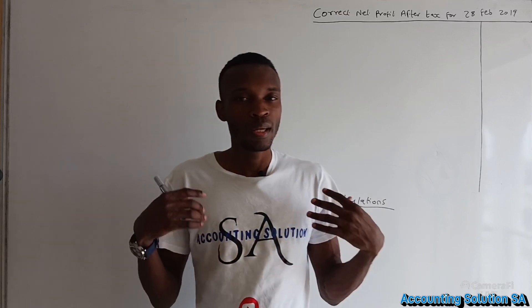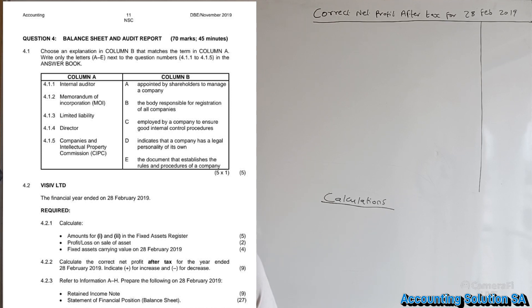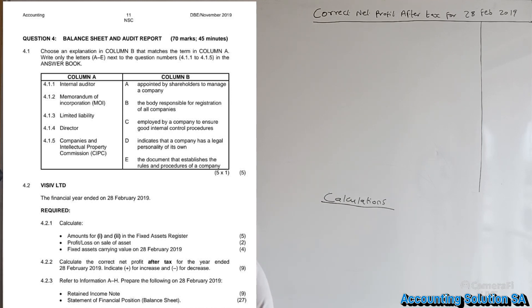Hi Grade 12, in this video we are going to do a question that falls under correct net profit after tax. This is from the 2019 November final examination. We are looking at question 4.2.2 — calculate the correct net profit after tax for the year ended 28 February 2019. Indicate plus for increase and minus for decrease, or use brackets for a minus.